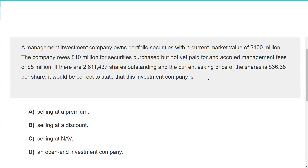A management investment company owns a portfolio of securities with a market value of $100 million. The company owes $10 million for securities purchased but not yet paid for — that's a liability — and has accrued management fees of $5 million, which are also a liability that hasn't been paid.